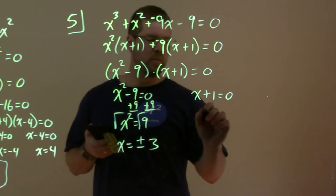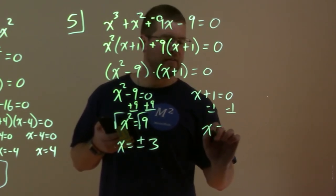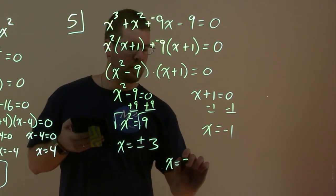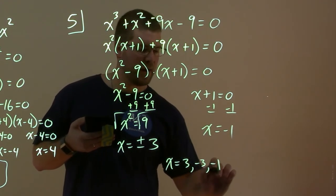Here, subtract 1 of both sides. You know how to do that. x equals a negative 1. And now we have our three answers, really. x equals, let's go positive 3, negative 3, and a minus 1.